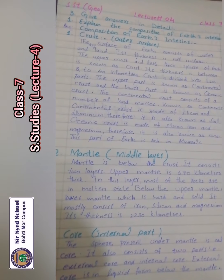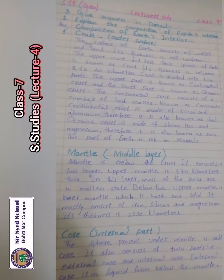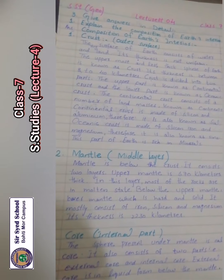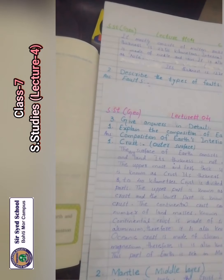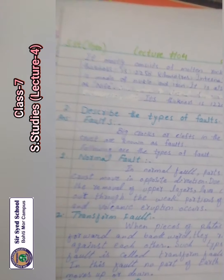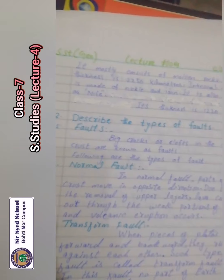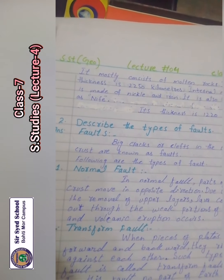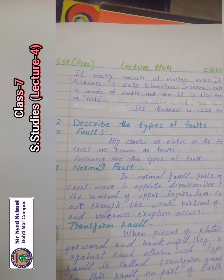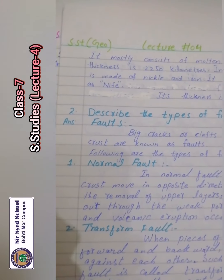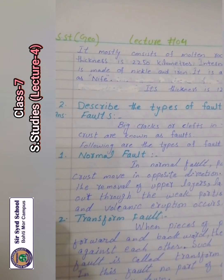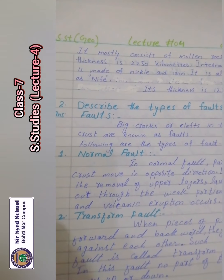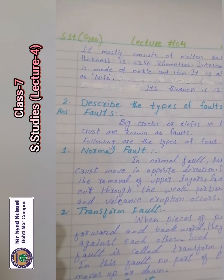Next, number three: Core — Internal Part. The layer present under the mantle is called the core, and it has two parts: external core and internal core. The external core is in liquid form and mostly consists of molten rocks. Its thickness is 2,250 km. The internal core is made from nickel and iron — this is also known as NIFE. Its thickness is about 1,220 km.